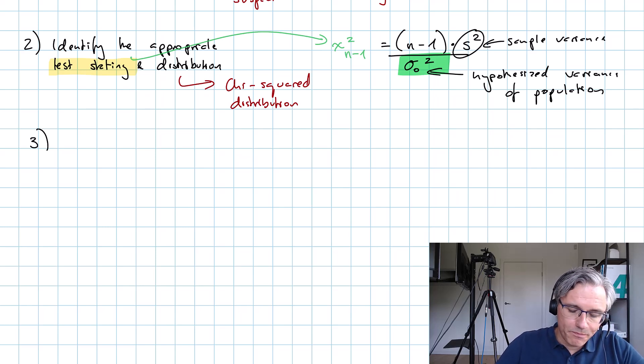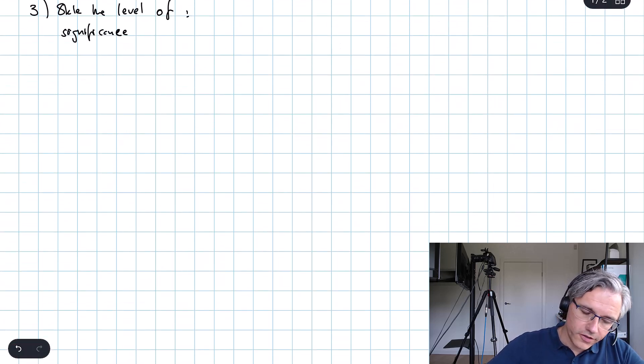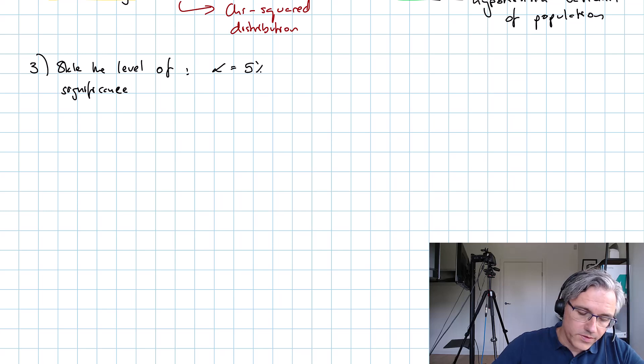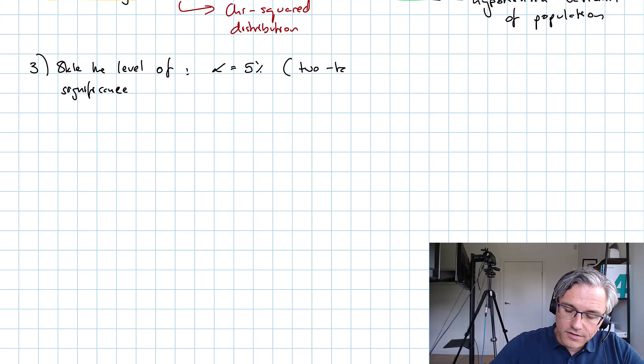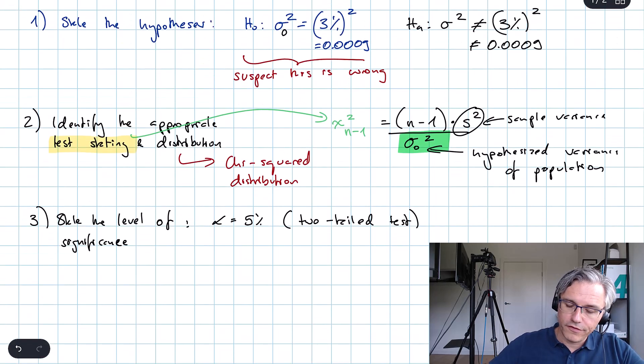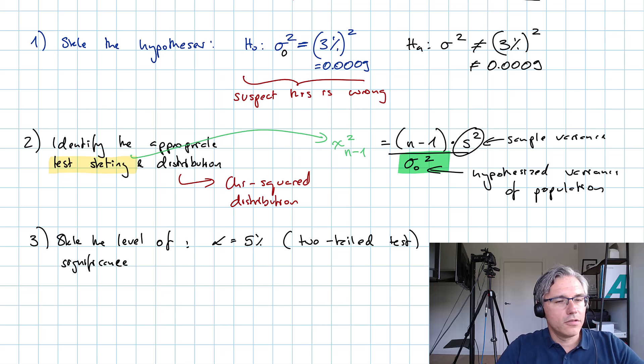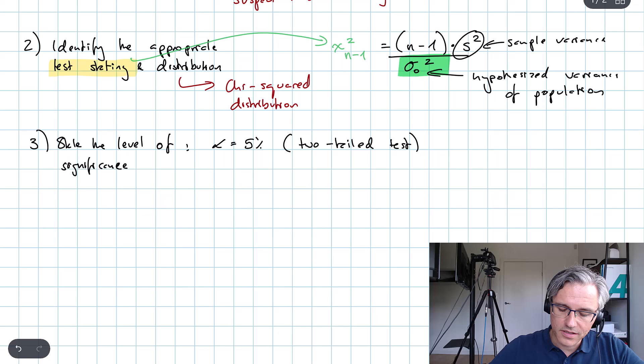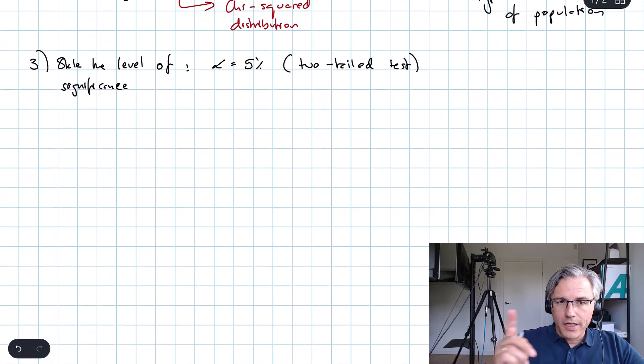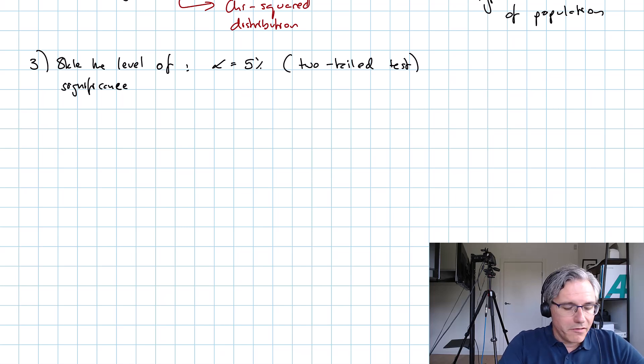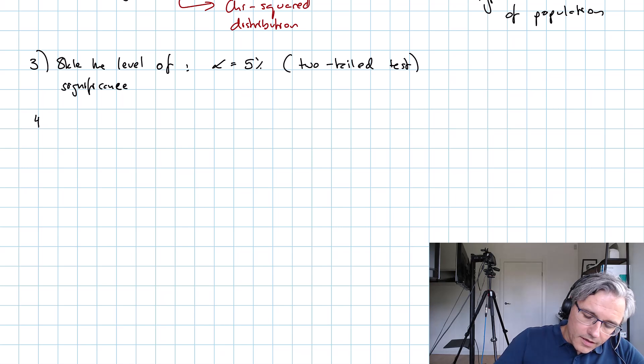Step number three: state always the level of significance. Here, the level of significance was given. We were told, do this at a 5-percent level of significance, so we stick to alpha being 5%, and importantly, it's going to be a two-tailed test. That comes from the fact that our null hypothesis is stated in terms of equals. The alternative is not equal to. That gives us two-tailed tests always.